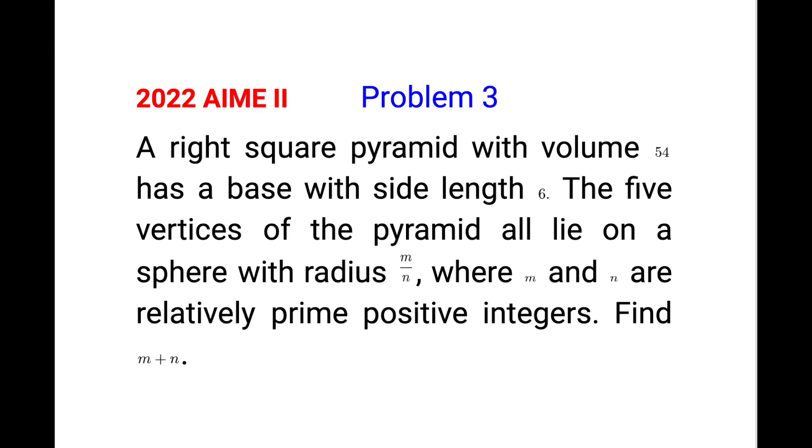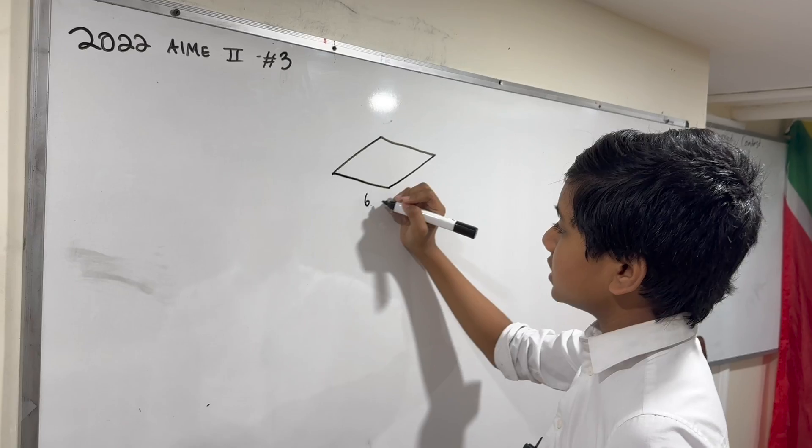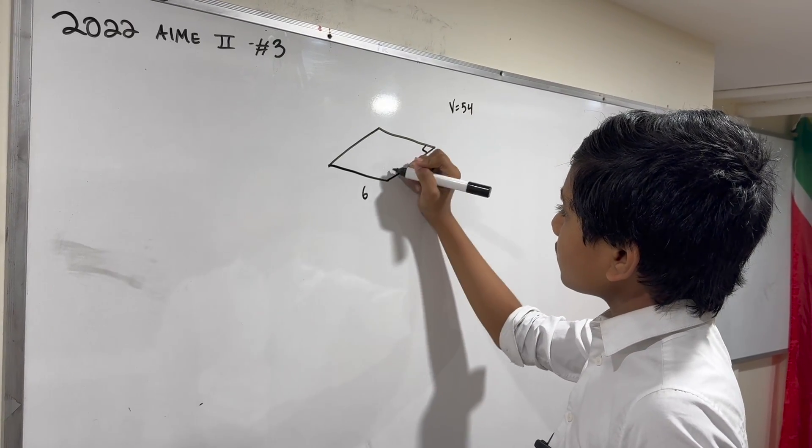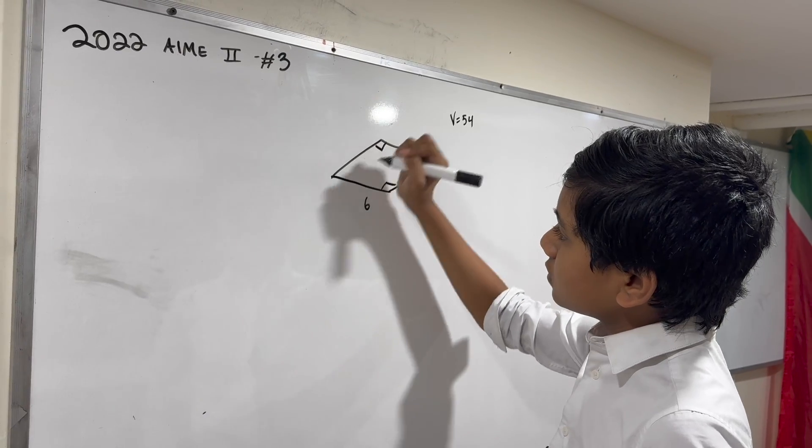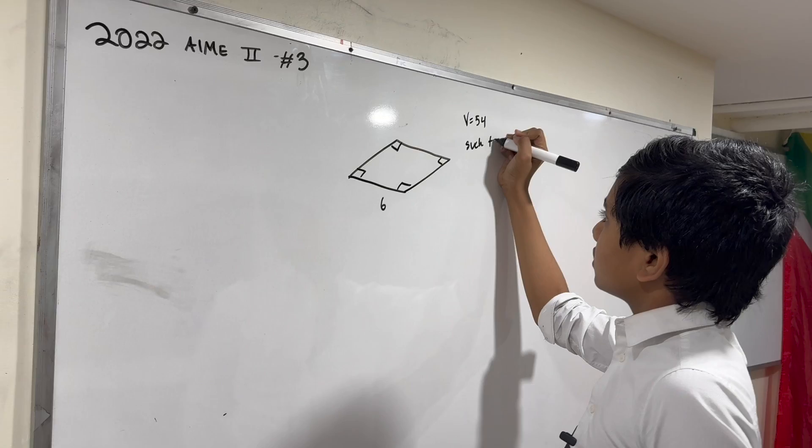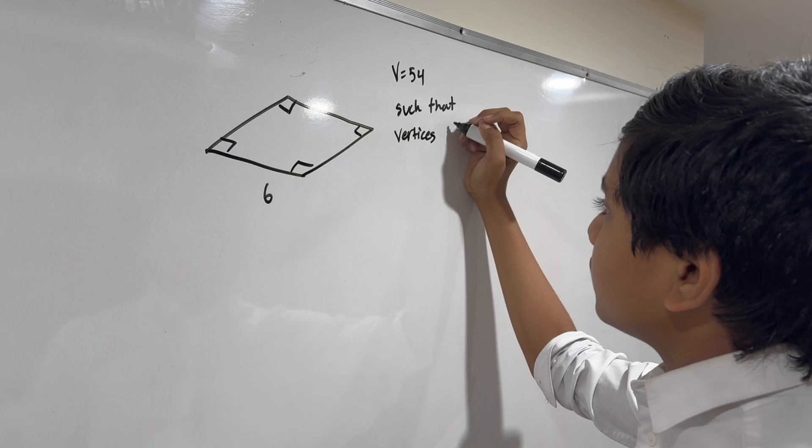Doing our first video on an AMC problem, the 2022 AMC 2 problem number 3: A pyramid with a square base of side length 6 has volume 54 such that all its vertices fall on one sphere.